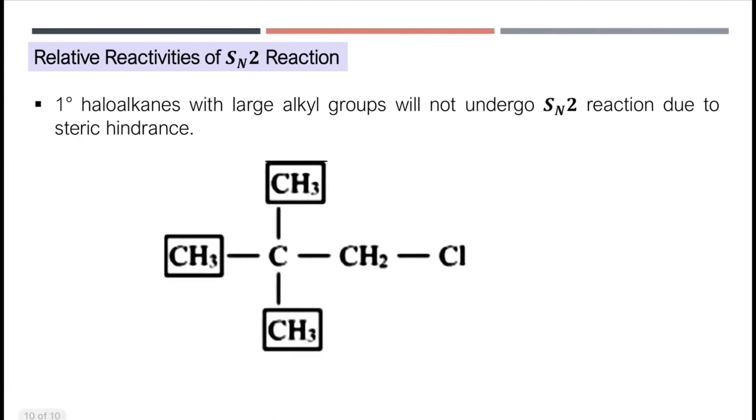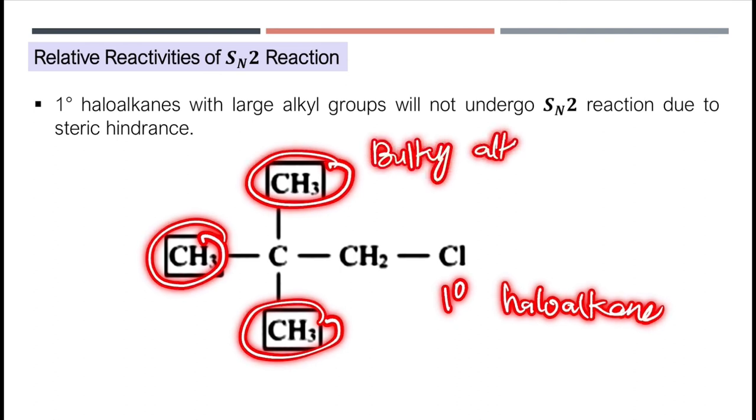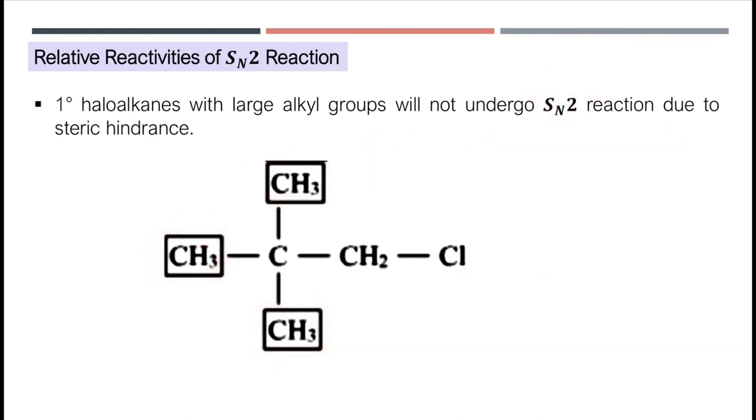Bukan semua primary haloalkanes boleh undergo SN2 reaction. Kalau primary haloalkanes itu dia ada large alkyl group, dia tidak akan undergo SN2 reaction sebab dia ada steric hindrance. Dalam case ini, dia tidak boleh attack dari belakang sebab ada bulky group di situ. This type of haloalkanes will undergo SN1 reaction. Kamu boleh refer dalam contoh yang saya tunjukkan di dalam video sebelum ini.